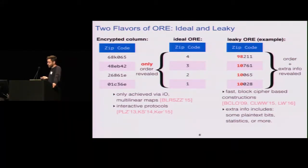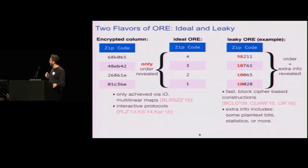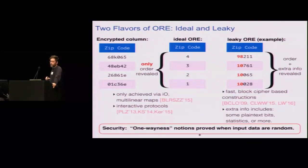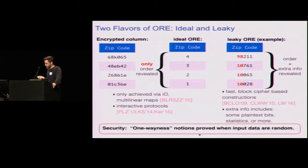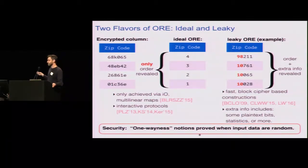Prior work has studied leaky ORE mostly by proving theorems — one-wayness theorems — saying that when you encrypt random input data, it has some plaintext recovery properties: you can approximate the plaintext but not fully recover it. But this was always in the setting where the input data are random.